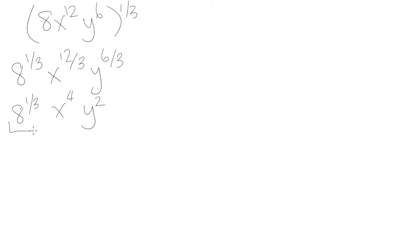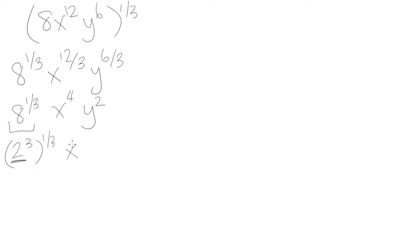Now we apply the same strategy to the 8^(1/3) term. We need to write 8 in a form where it's something raised to the power of 3, because then raising it to the power of 1 third gives us 3 over 3, which is 1. We know 2 cubed equals 8, so we write 8 as 2³ raised to the power of 1 third. That gives 2^(3/3), which is 2^1. So the final answer is 2x⁴y².